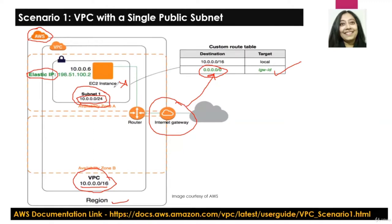When you launch the EC2 instance, you can launch it with a public IP address as well. But after launching, we want to ensure that we associate an elastic IP address to it, so that even if the EC2 instance is stopped or reboots, the public IP address will not change.